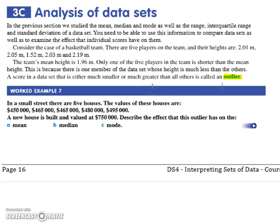Alright, so guys, on this one we've got five values of houses and then they've given us a sixth one. They want to know what effect that sixth one has on the mean, the median, and the mode.